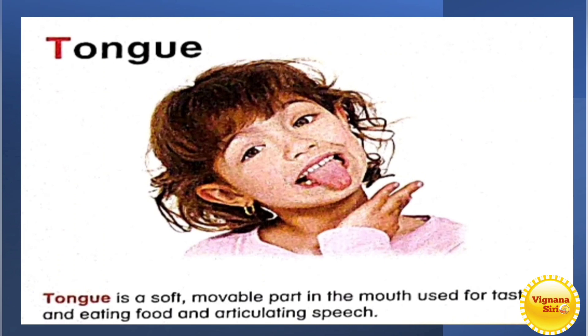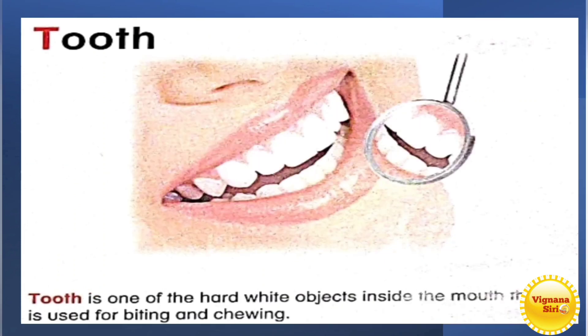T for tongue. Tongue is a soft movable part in the mouth. So mainly tongue is used for tasting, right? So whatever the things we are eating, you will taste. It's very spicy. It's very sweet. So all those things you will be getting by the help of tongue.